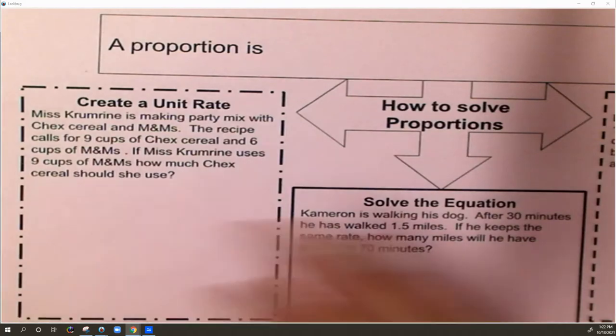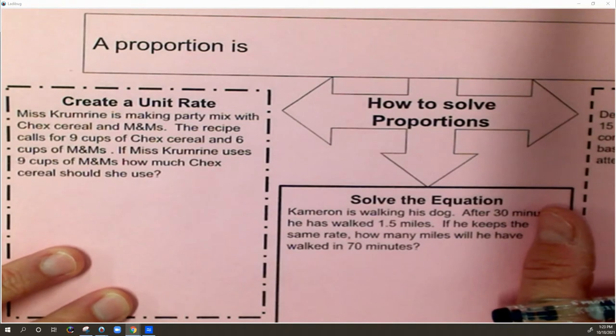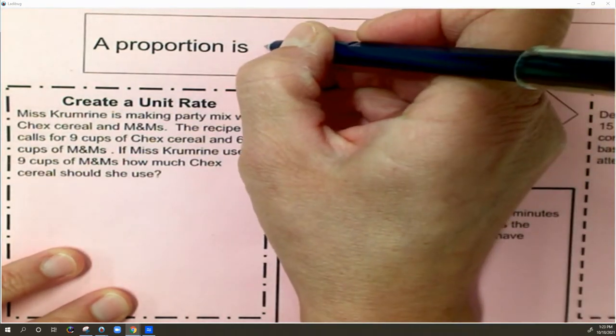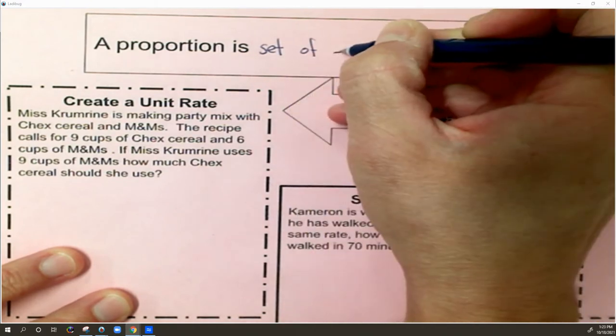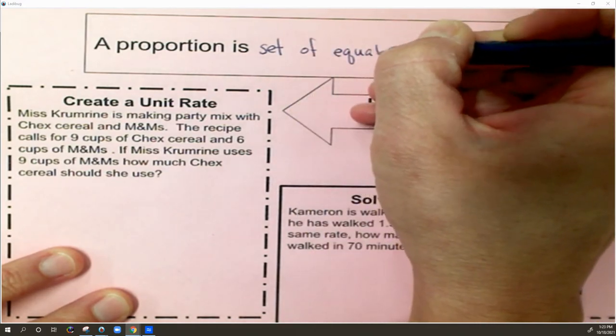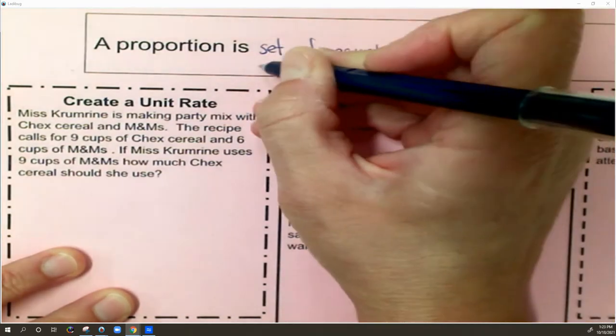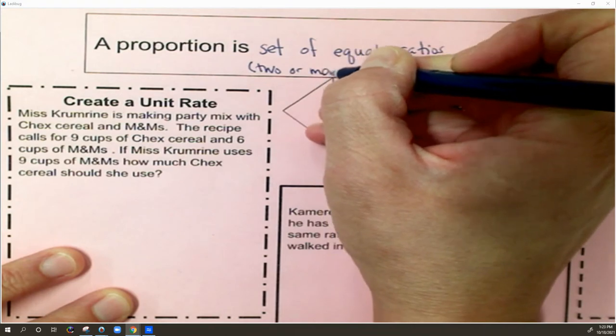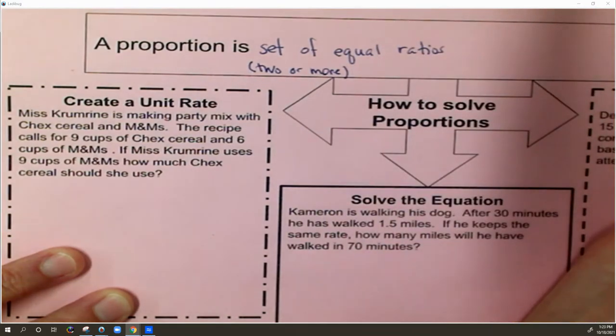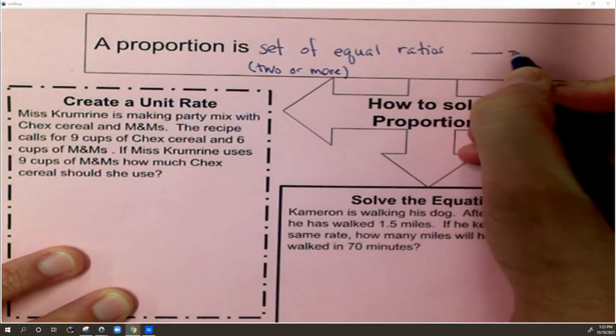Okay, let's look at this graphic organizer on how to solve proportions. Remember, a proportion is a set of equivalent or equal ratios. And by set, I mean two or more, because you're going to have two or more equal ratios to make a proportion. And they typically look like line equals line.